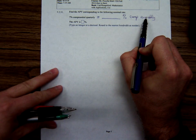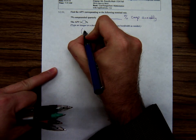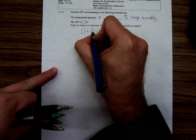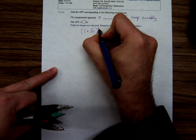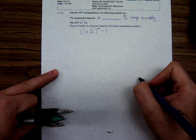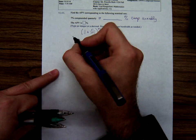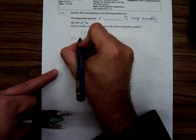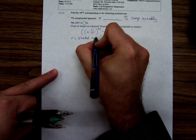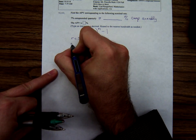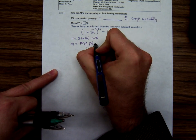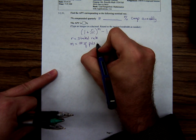And the formula we're going to use for this is 1 plus R over M to the M minus 1. And the natural question is, what are R and M? Well, lowercase r is just that stated rate. M is the number of periods or compounding periods per year.